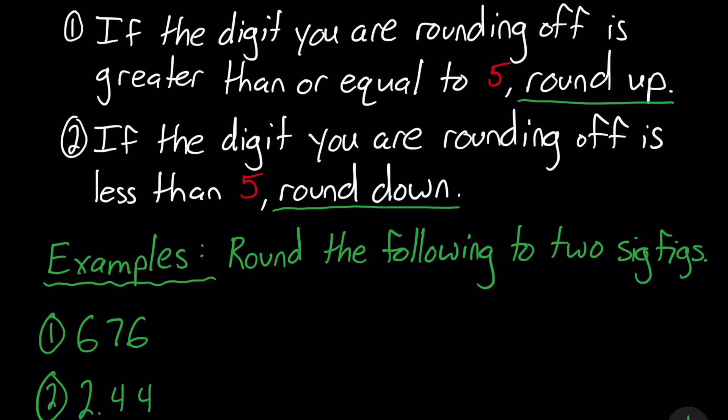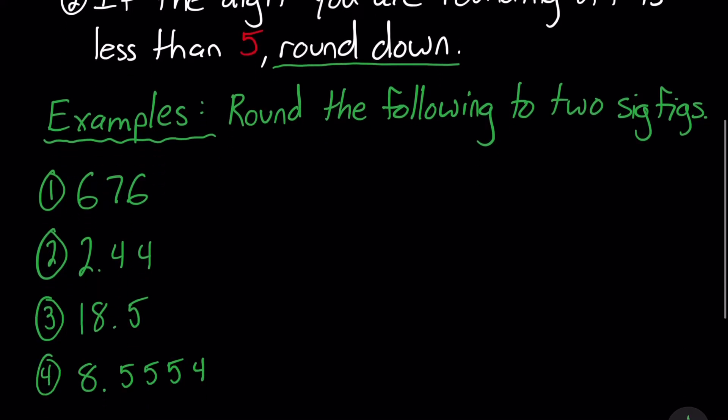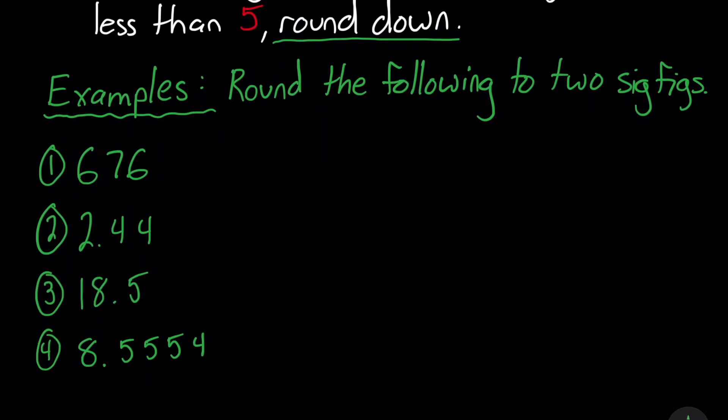So we have four examples here. We are going to round to two significant figures. If you do not know what significant figures or sig figs are, please go watch my video on sig figs and then come back to these examples. So let's get into the first one.